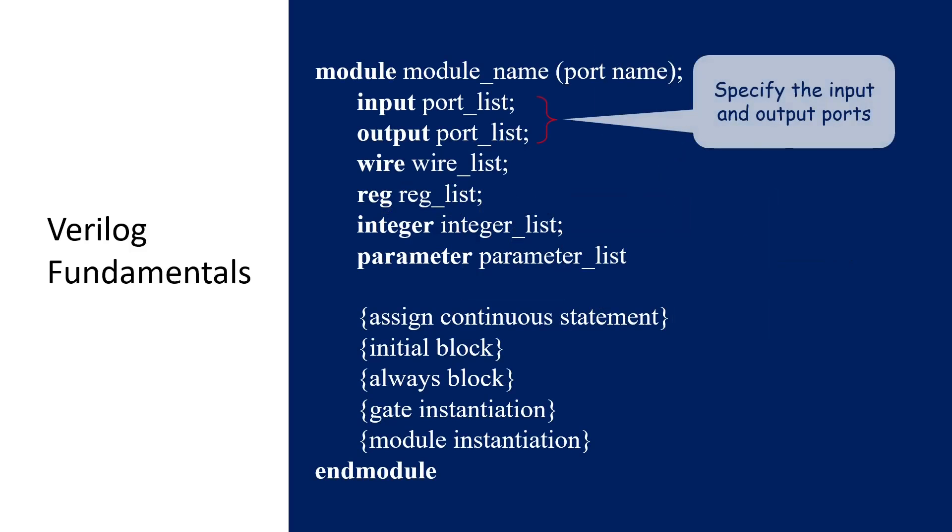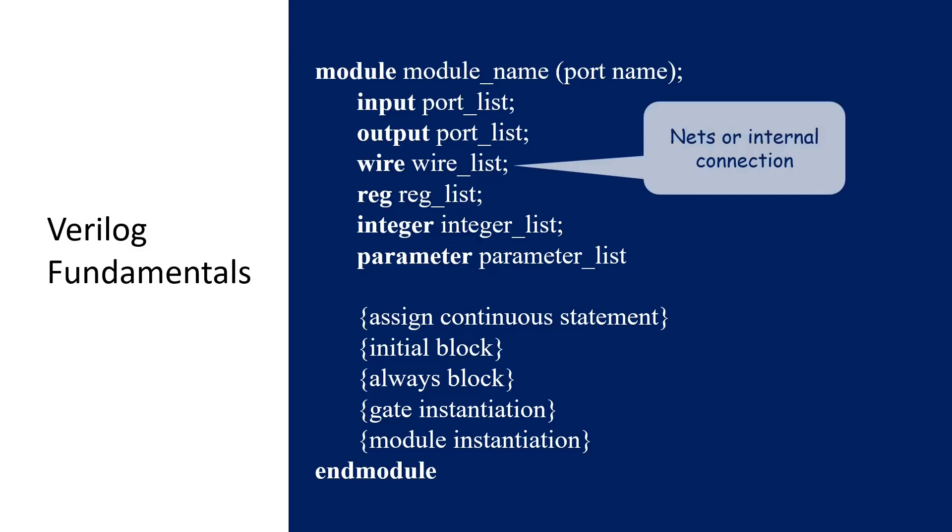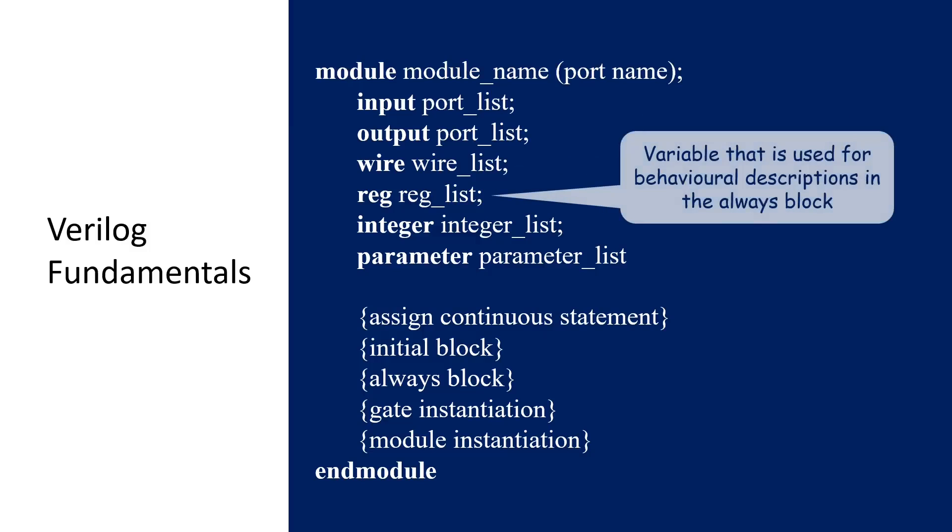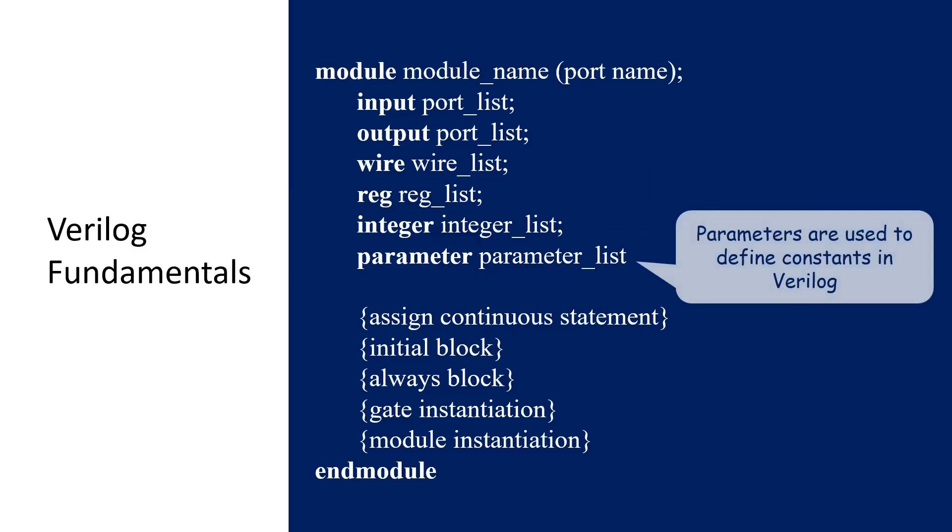The input and output declarations will specify which ports in the list are the input and output ports. Wire declaration will define the nets or interconnection of a module. Reg declaration specifies the variables that are used for behavioral descriptions in the always block. Here is the always block. We will see what is the always block in the module description shortly. Integer declaration is used to hold an integer value in the always block. Last for the declaration part, the parameter declaration. It is used to define constants in a Verilog program.